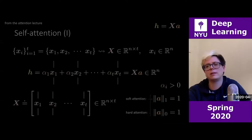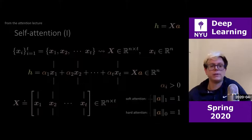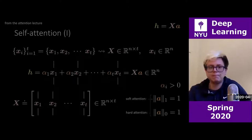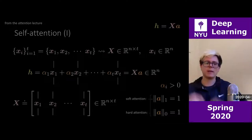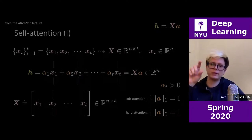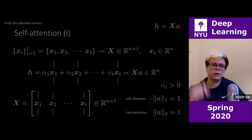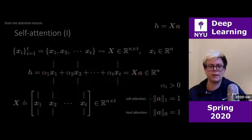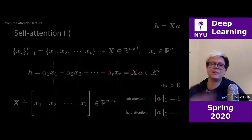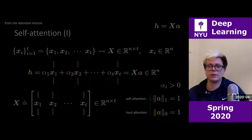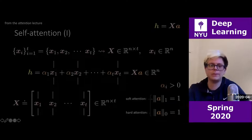Let's get there from last week's lesson — a quick recap. We talked about self-attention. We had a set of x's: x1, x2, and so on until xd. You can stack these to get capital X. Each small x is of size R^n, and the hidden layer for a given x is a linear combination of these vectors in the set, which can be written as a matrix-vector multiplication: h equals X times a.